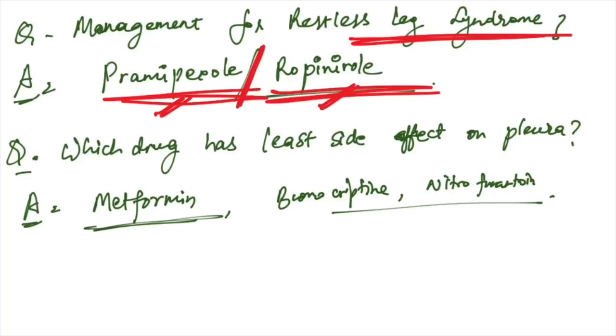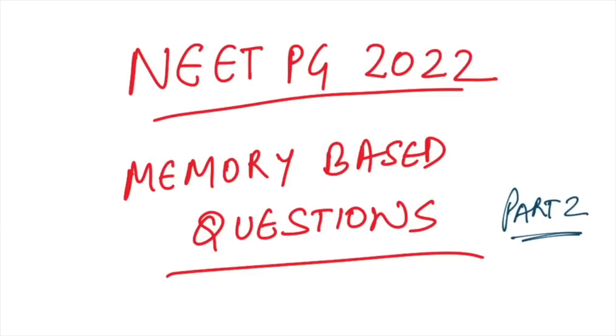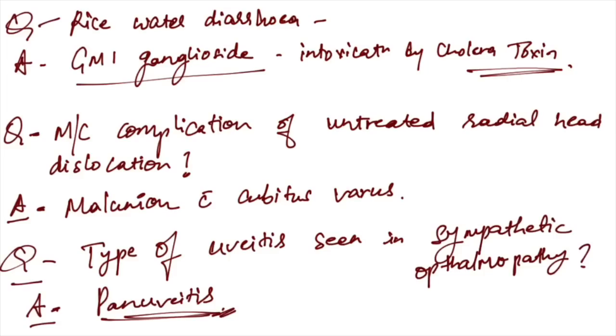Which drug has the least side effect on pleura? Out of options like metformin, bromocriptine, and nitrofurantoin, metformin has the least side effect on pleura. Rice water diarrhea is due to intoxication of GM1 ganglioside, involved by intoxication by cholera toxin.